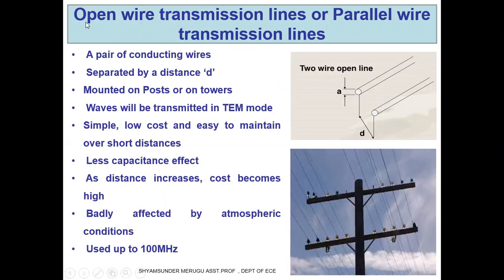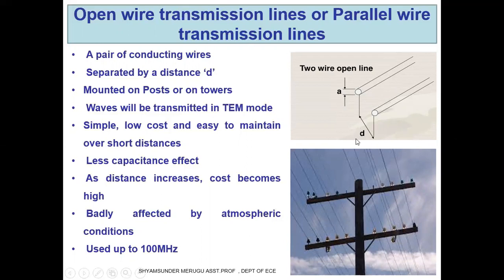Open wire transmission lines are also called parallel wire transmission lines. Let us justify why they are called both open wire and parallel wire. In these pictures we can see the lines are going parallel to each other and carrying the signal, so we call them parallel wire lines. At the same time, they are suspended in the air over posts or towers, so we call them open wire since anything can easily access them when they are open to everyone.